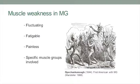The features of weakness in myasthenia: it's fluctuating, so it can vary significantly even during the course of a single day. It's fatigable, so typically muscles get weak with use and get better with rest. There's no pain associated with myasthenia, and there are specific muscle groups involved.